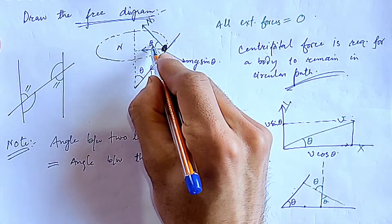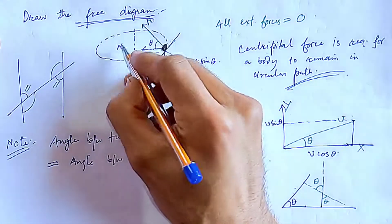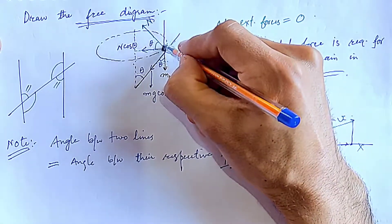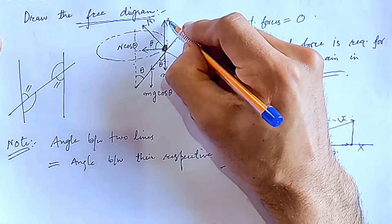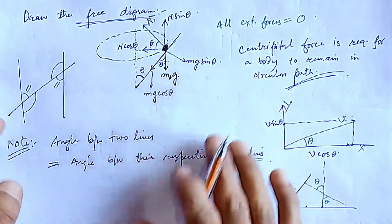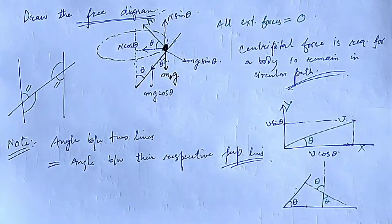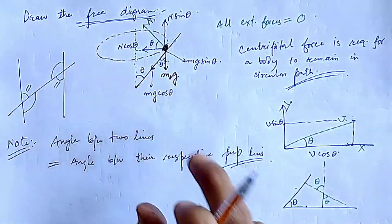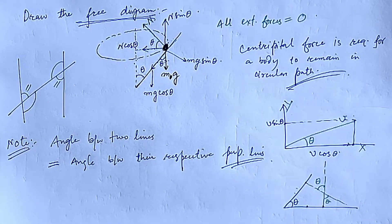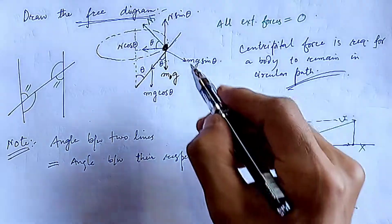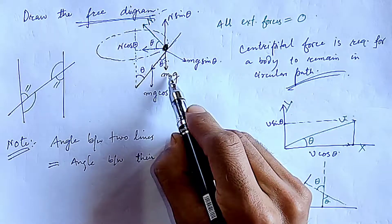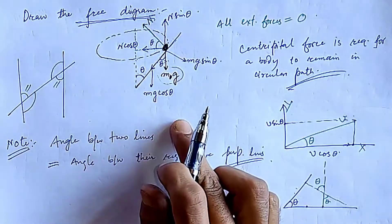Along this axis, the component of N is N cosine theta, and perpendicular to it, it will be N sine theta. Now the free body diagram is complete. Observe this free body diagram carefully — N sine theta is equal and opposite to the downward force mg.